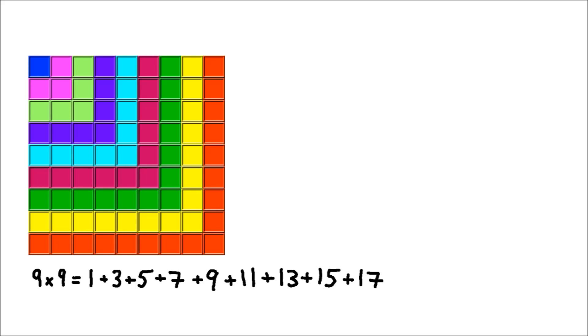In fact, we can see that 9 squared is equal to the sum of the first 9 odd numbers. And going back to 2 squared, that's the sum of the first 2 odd numbers, 1 plus 3.